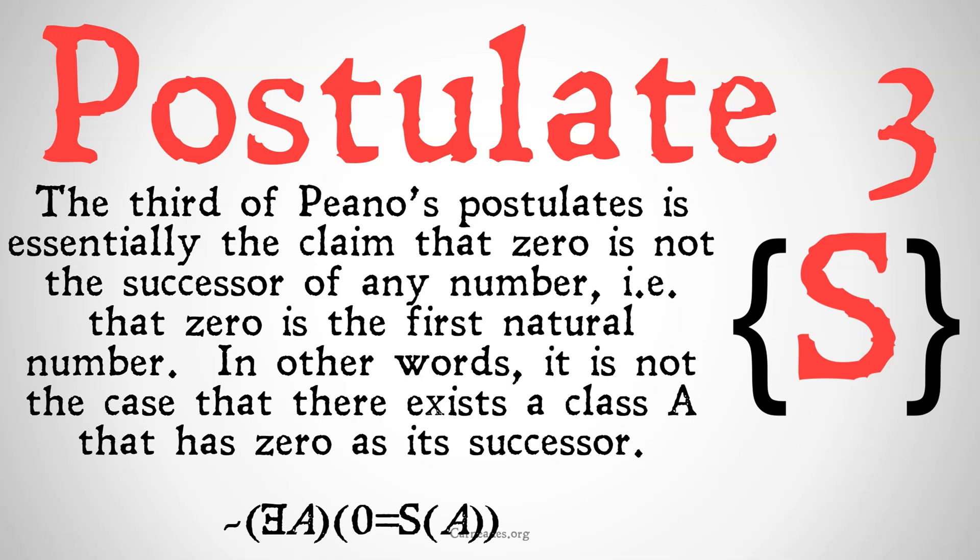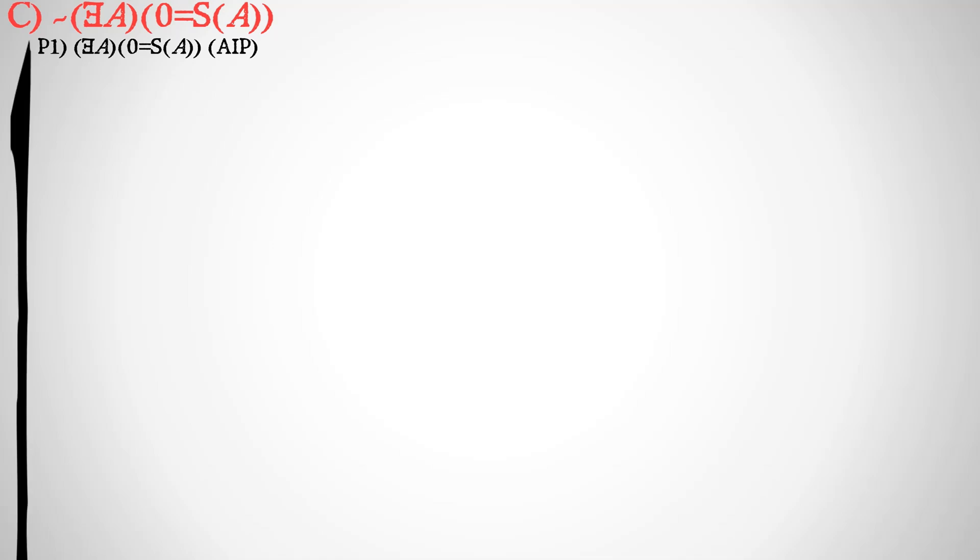If you want to try it on your own, pause the video now and give it a try. If not, stay tuned and we're going to walk through it. We are going to do an assumed indirect proof: we'll assume the contradiction of our conclusion, work our way to a contradiction, and show that the conclusion must be the case.